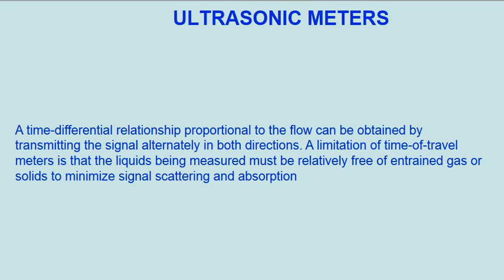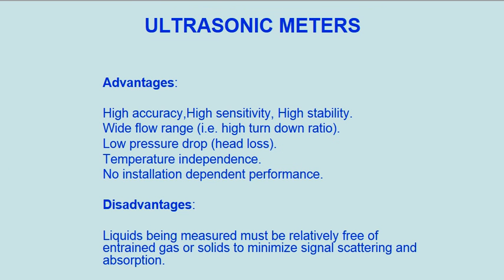A time differential relationship proportional to the flow can be obtained by transmitting the signal alternately in both directions. A limitation of time of travel meters is that the liquids being measured must be relatively free of entrained gas or solids to minimize signal scattering and absorption.